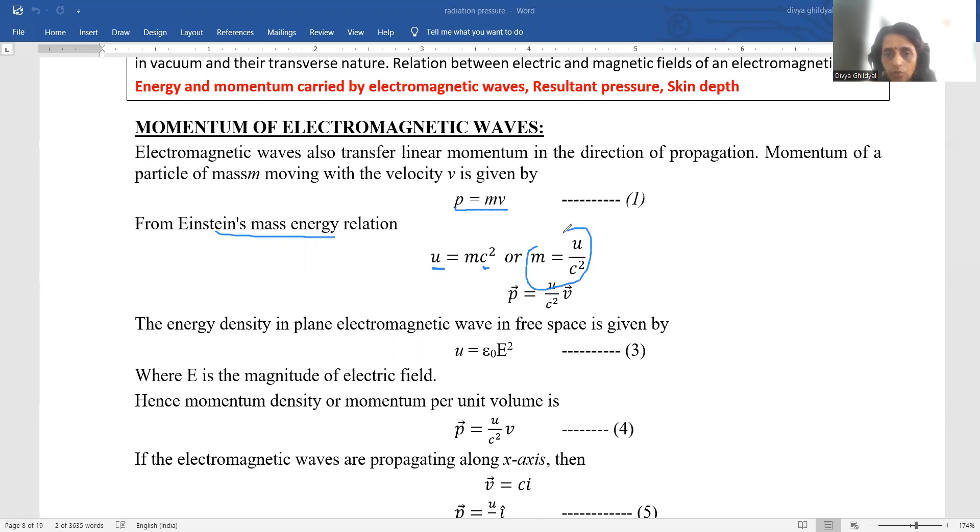So m becomes equal to u upon c square. Putting this value of m in this expression above, we get p is equal to u upon c square into v.